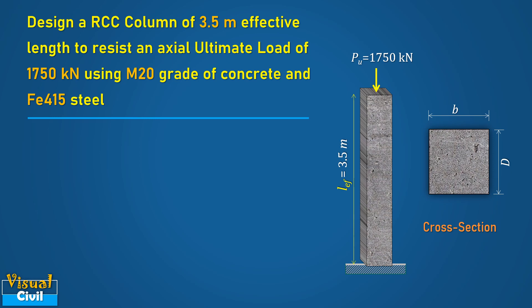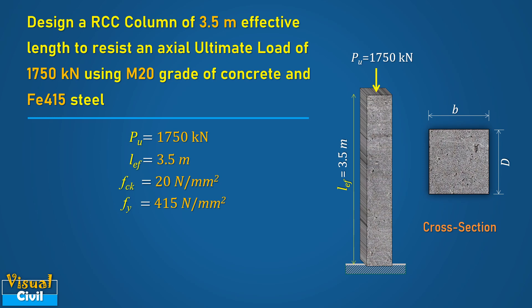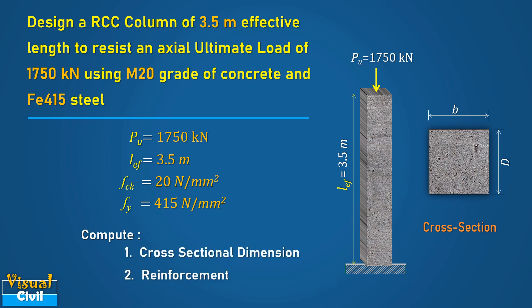Based on the problem statement, we have axial ultimate load PU equals 1750 kN, effective length equal to 3.5 meter, value of fck equal to 20 N/mm² and value of fy equal to 415 N/mm². In this design, compute the size of column and reinforcement, which are unknown in this problem statement.